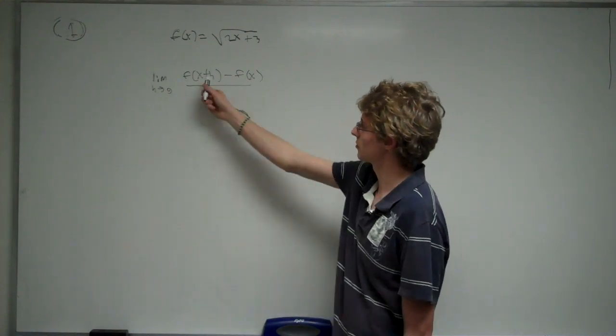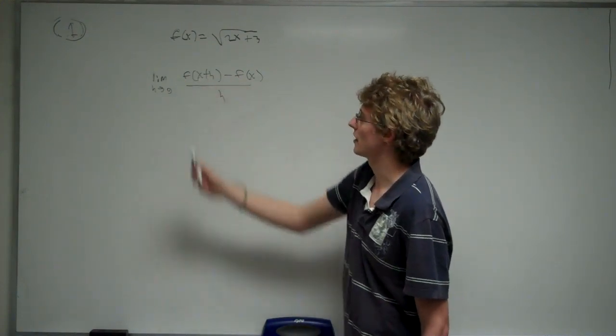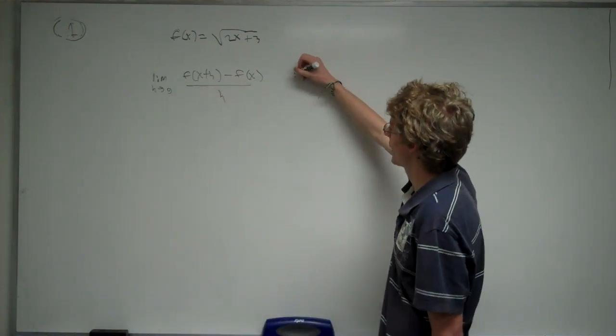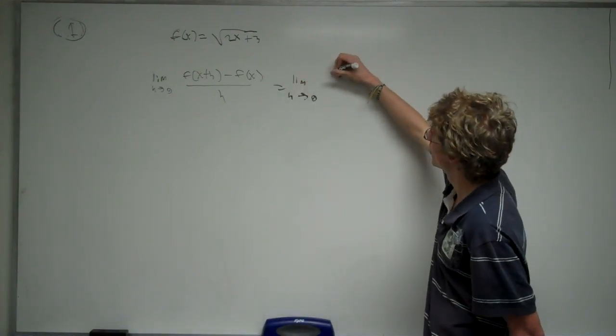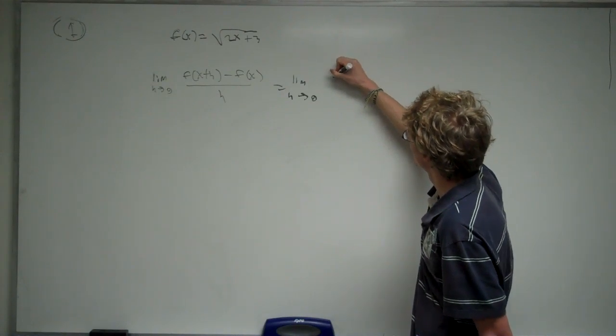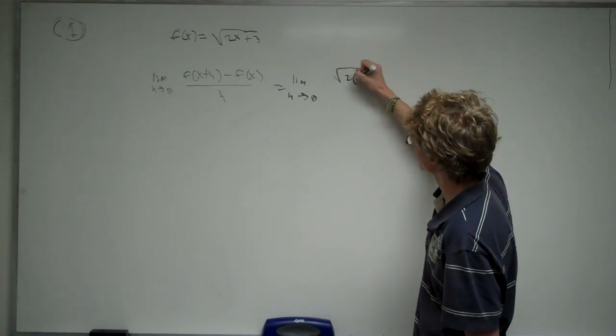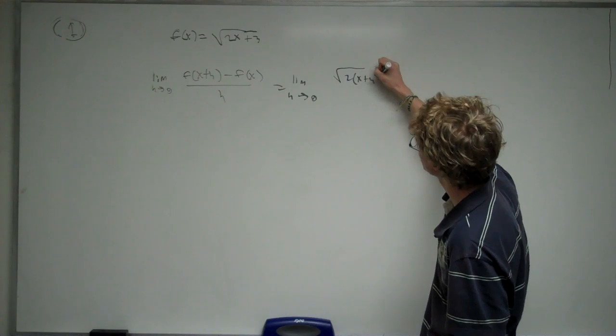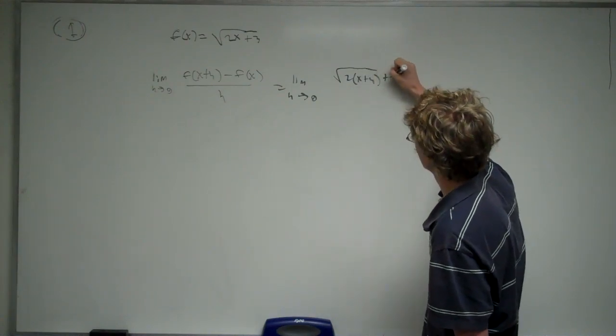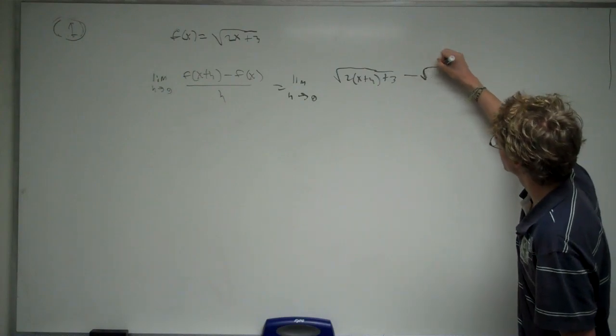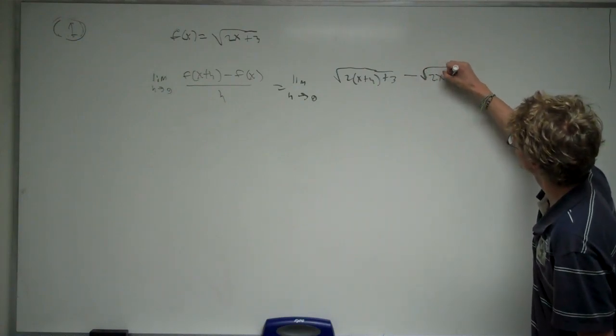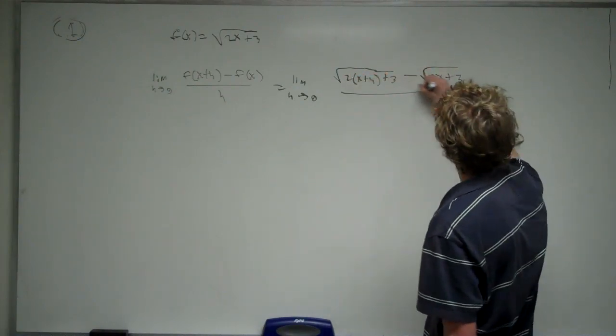So, what we're going to do now is plug in the f of x's and that's going to give us the limit as h approaches 0 of the square root of 2 times x plus h plus 3 minus the square root of 2x plus 3 all over h.